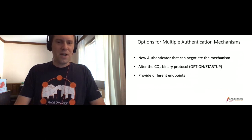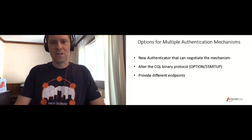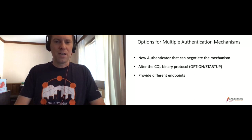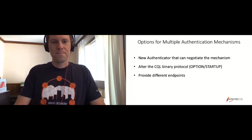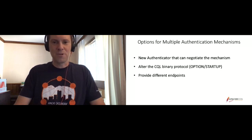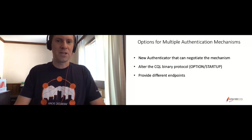Among the other options, we have a new authenticator that can negotiate the mechanism. This is actually one of the things proposed in that ticket — if you provide an implementation of an authenticator where the authenticate challenge and authenticate results essentially negotiate that mechanism, that's one way of doing it. However, this runs back into the same issue of requiring coordination with clients so that you can be backwards compatible, as clients would have to be updated to also have an implementation for this new authenticator.